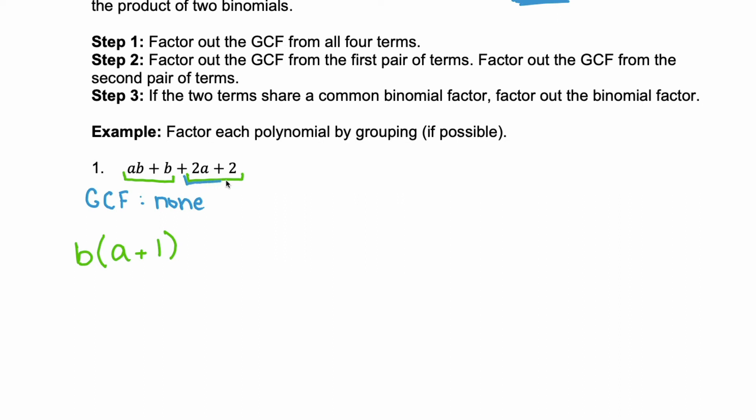Now we look at that second grouping. I have 2A plus two, and they have a positive two in common. I factor that out, and I have A plus one as the binomial left behind. Well now look. I have two terms, and these two terms have the binomial A plus one in common. So if I factor out A plus one, that first term I left behind the B, and the second term I left behind the plus two. So this four-term polynomial fully factors into these two binomials, A plus one and B plus two.